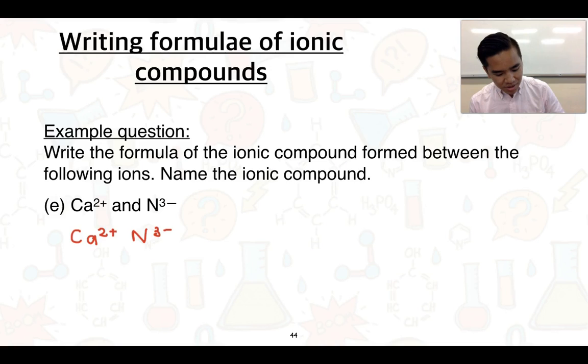Finally, I've got Ca2+ and N3-. Let's go ahead and switch those numbers, so crisscross them over: two to the N, three to the Ca, and we're left with Ca3N2, and the name of this is calcium nitride.